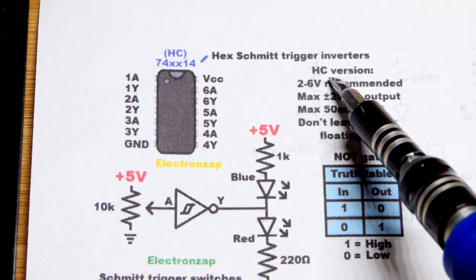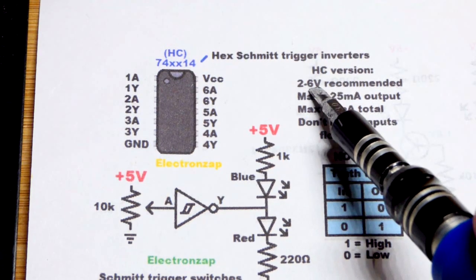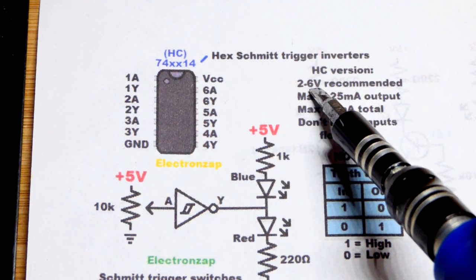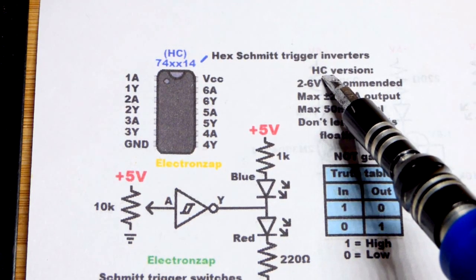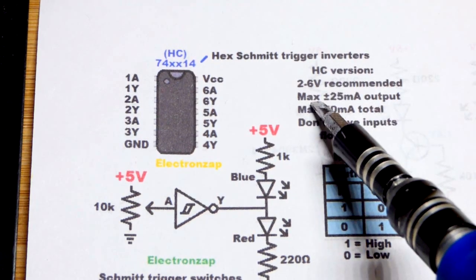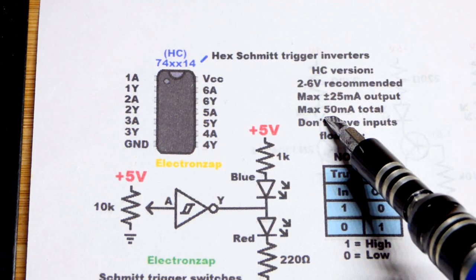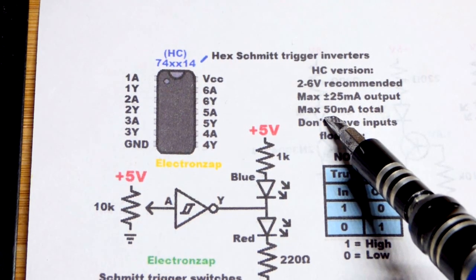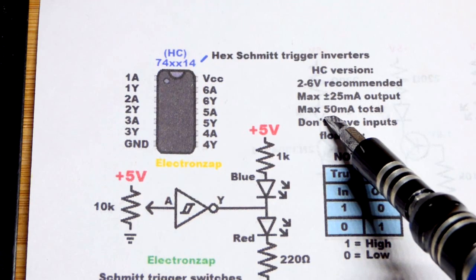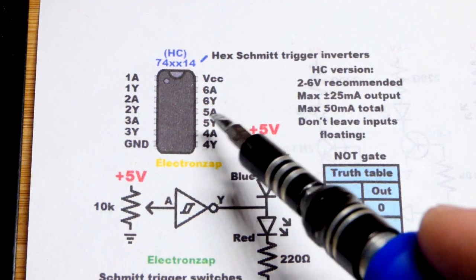The high speed CMOS version of these integrated circuits are usually a bit more versatile than the other ones. You'd want to check the data sheet for the limitations of the particular one you got. But if you have a high speed CMOS version you should be able to power it with 2 to 6 volts recommended and maximum of sinking or sourcing 25 milliamps of current from the output. But remember that there's a total maximum current of probably about 50 milliamps.